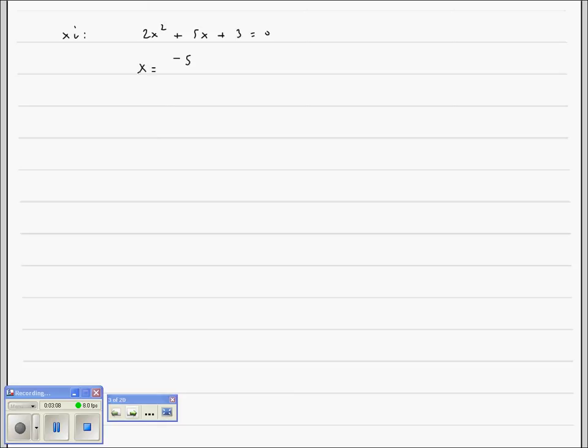That'll be negative 5 plus or minus the square root of your b squared. That'll be 25 minus 4 times your a, which will be 8 times your c. Gets that up to 24. And we'll divide that by 2 times our a, which will be 4. We have negative 5 plus or minus, inside the radical 25 minus 24 is 1. The square root of that is 1. Since that worked out nicely, that tells me it would have factored.